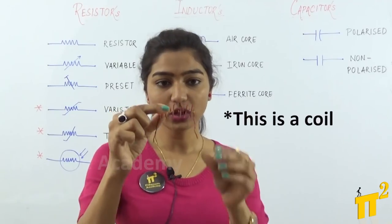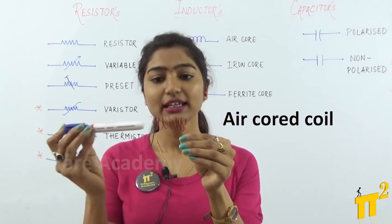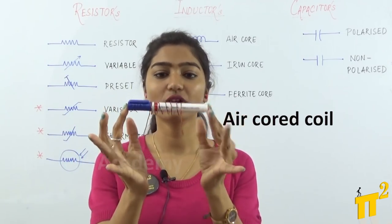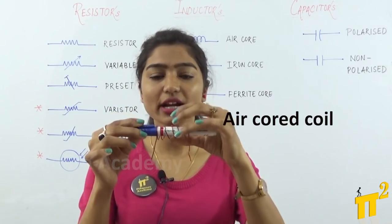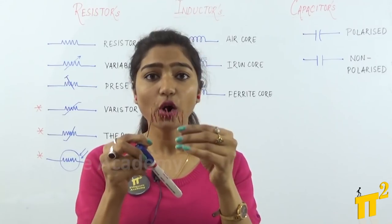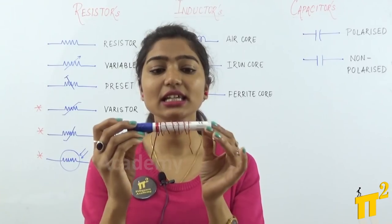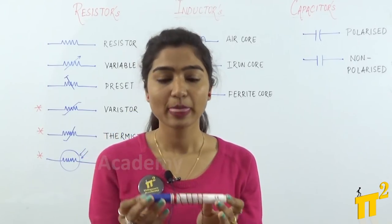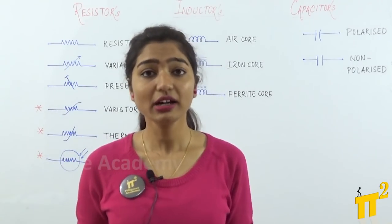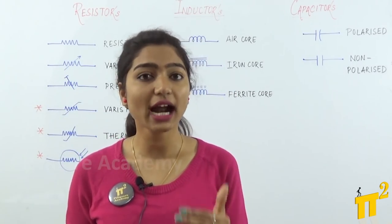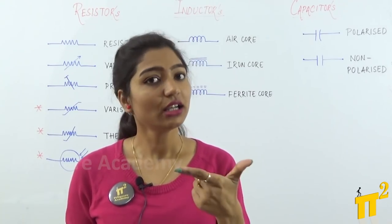A coil with air or with a non-magnetic material falls into the category of air core. The pen I have used is a non-magnetic material, so any coil wound on that is also an air core. Now, speaking of iron core and ferrite core, both fall into the category of magnetic core — one being iron, the second being ferrite.